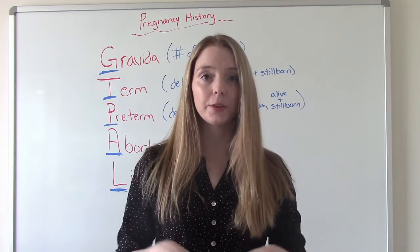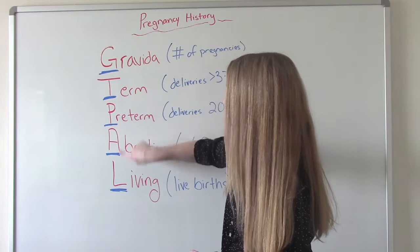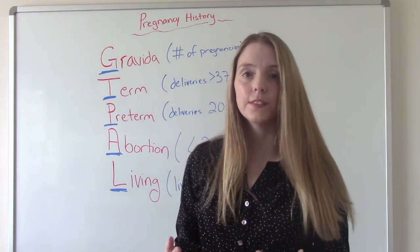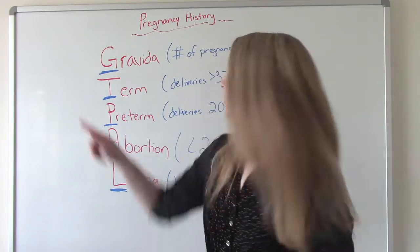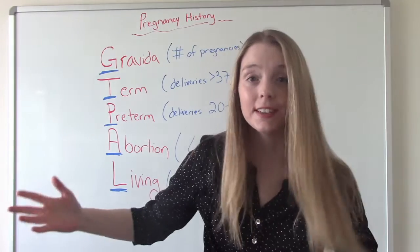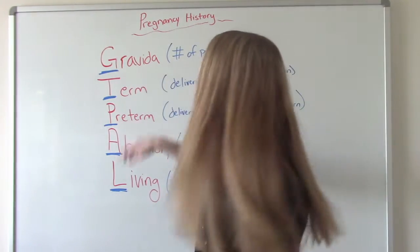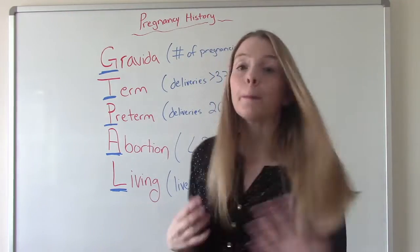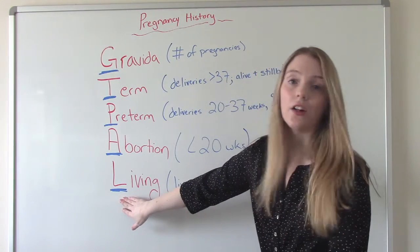Some key facts you need to know: when doing this, the G, T, P, and A, if you have multiples, if this woman has twins, triplets, etc., they only count as one for these categories. So even if you have octuplets in there, you've got eight babies, it's still one pregnancy. So G, T, P, and A, multiples count as one. When they count as individual babies is under L.